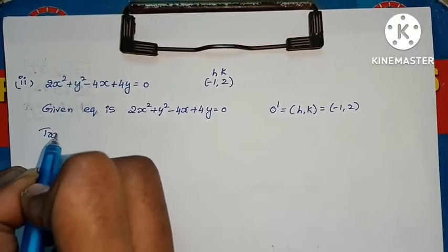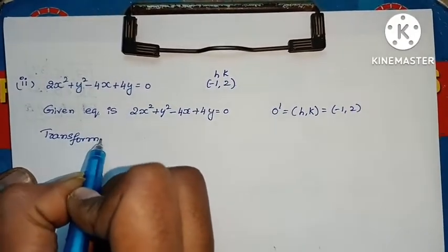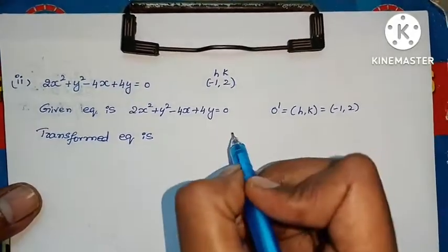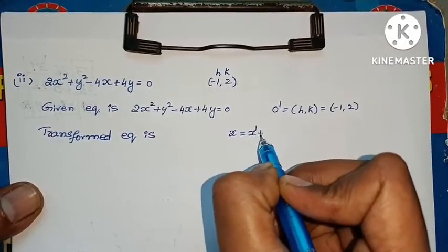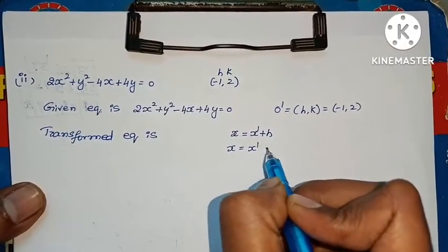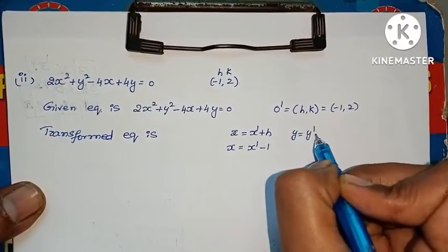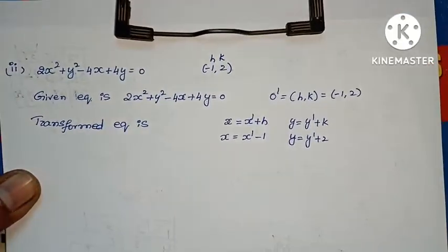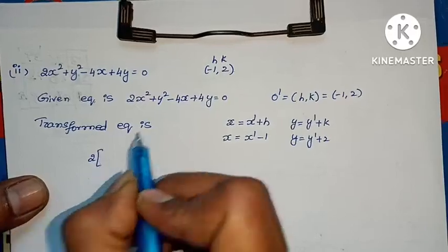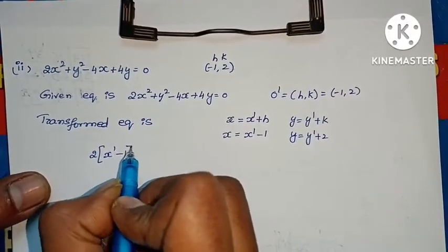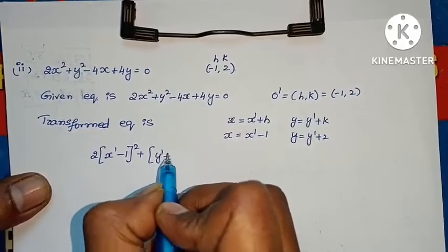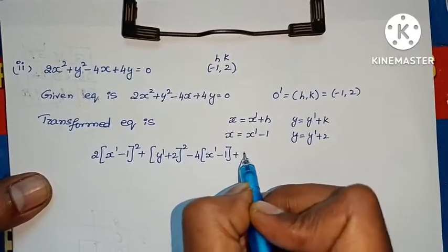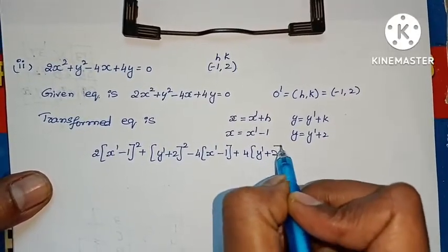Before writing the transformed equation, apply the formulas: x equals x dash plus h, so x equals x dash minus 1; y equals y dash plus k, so y equals y dash plus 2. Apply these into the transformed equation: 2 into (x dash minus 1) whole square plus (y dash plus 2) whole square minus 4 into (x dash minus 1) plus 4 into (y dash plus 2) equals to 0.